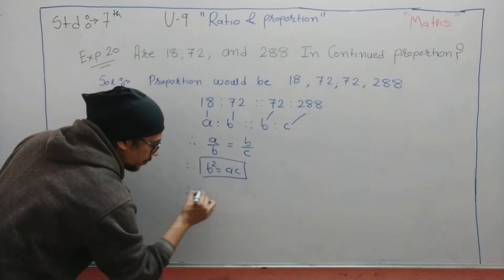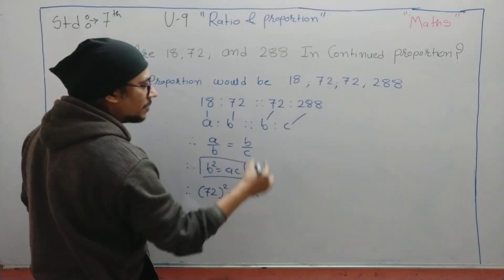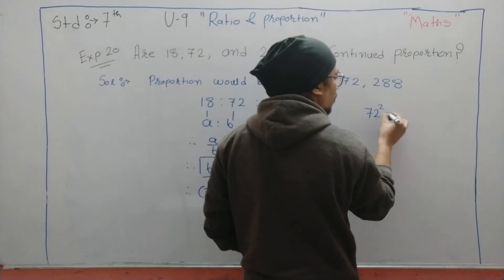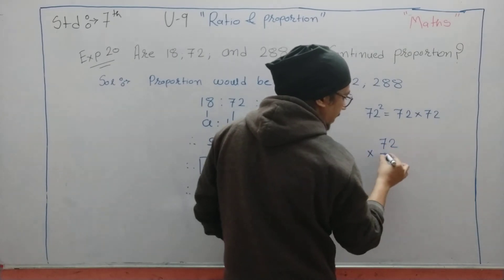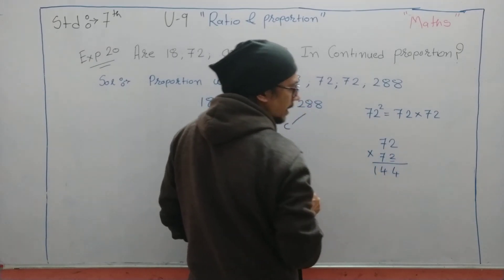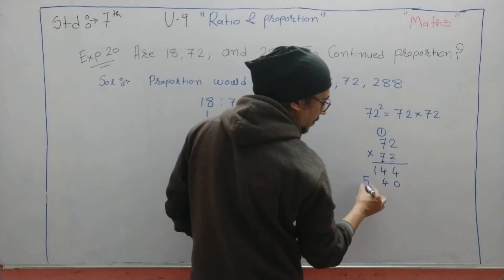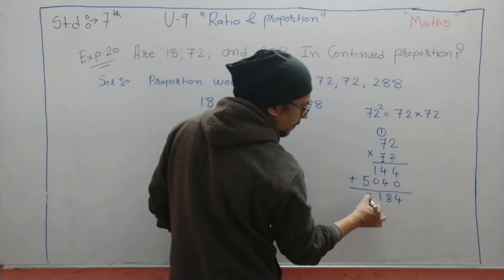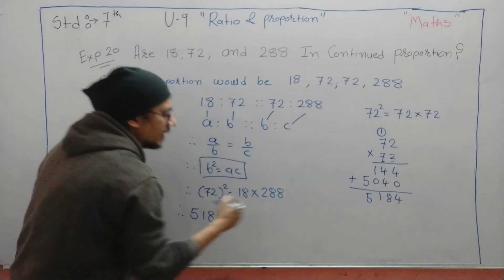We can put 72 square. 72 square is equal to a, we can put 18, and c, we can put 288. 72 square we can check as 72 into 72. Let us do the multiplication and check the answer. 72 into 72. We will start with the unit place: 2 times 2 are 4, 2 times 7 are 14. 7 is at 10 place, so put a 0 over here. 7 times 2 are 14, remainder will be 1. 7 times 7 are 49 plus 1, that will be 50. Do the addition: 4 plus 0 will be 4, 4 plus 4 will be 8, 1 plus 0 will be 1, 5 plus nothing will be 5. So it comes as 5184.